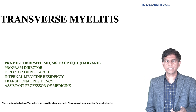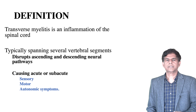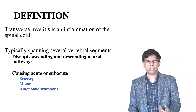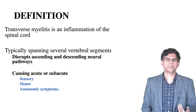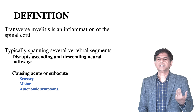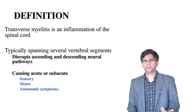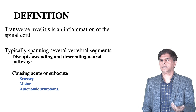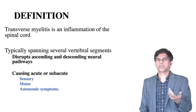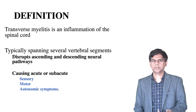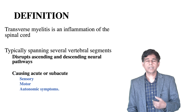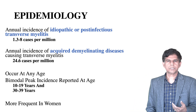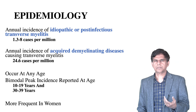Definition: transverse myelitis is an inflammation of the spinal cord spanning several vertebral segments, disrupting the ascending and descending neural pathways, causing acute or subacute presentation. You can have sensory, motor, and autonomic symptoms. Let's look at a bit of epidemiology.